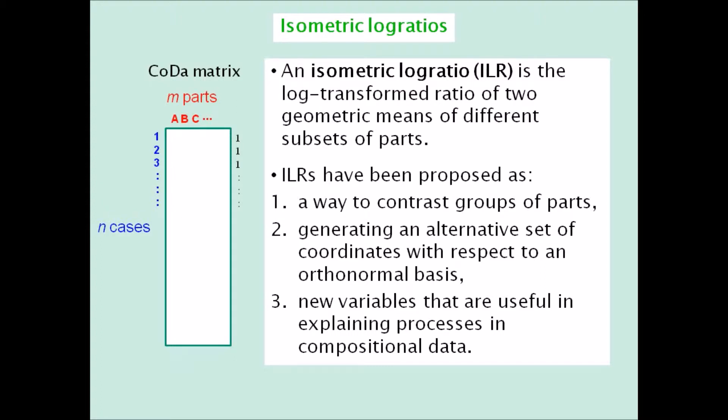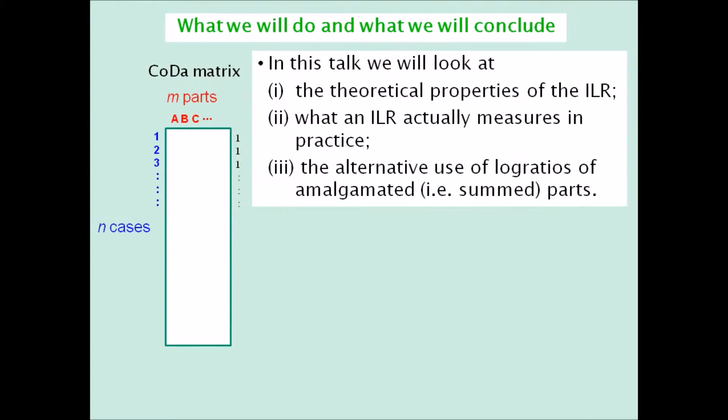This family of transformations has been proposed for three main reasons: first, as a way to contrast groups of parts; second, as generating a new set of coordinates with respect to an orthonormal basis; and third, as new variables that can be useful in explaining processes in compositional data. In this talk we will look at the properties of the ILR and what an ILR actually measures in practice, and the alternative use of log ratios of amalgamated — that is, summed — parts.